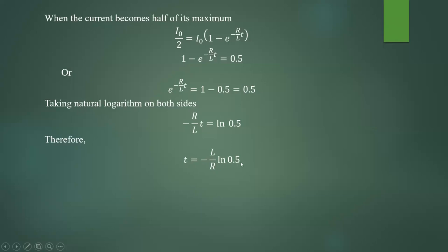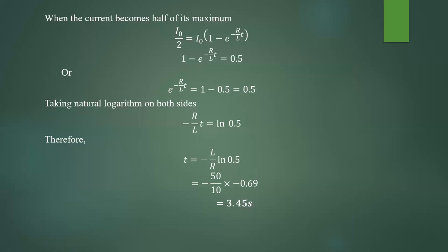So T equals minus L by R into ln of 0.5. L is 50, R is 10, and if you calculate ln of 0.5, you will get minus 0.69. So if you calculate this, you are going to get the answer T equal to 3.45 seconds. At 3.45 seconds, the current in the circuit becomes equal to half of the maximum, which is 2.5 milliampere, because maximum current is given as 5 milliampere.